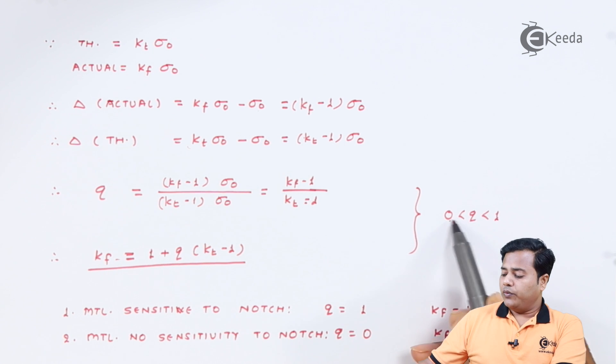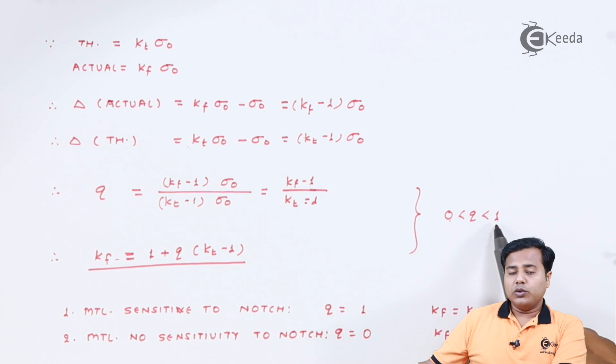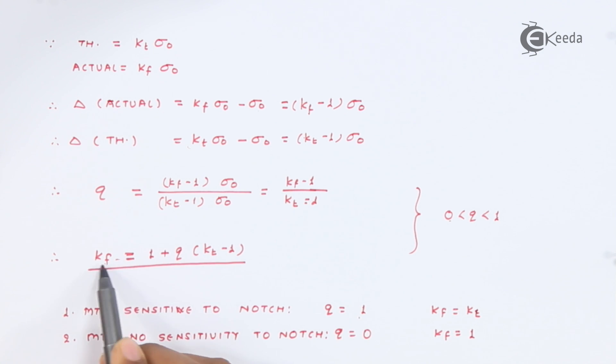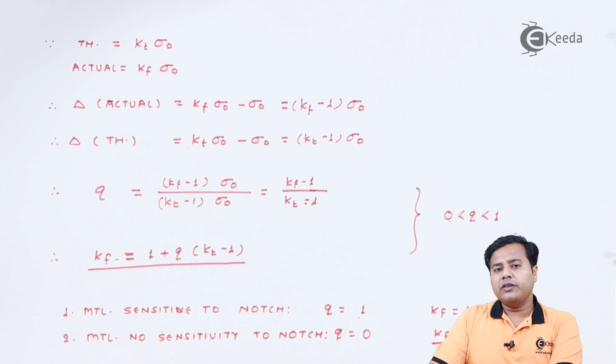But we knew that q value will always lie between 0 to 1. It will be of course greater than 0, but it will be smaller than 1. As we have seen in the last slide, this particular value, if we find out, we will get that material sensitive to notch. If the q value is 1, in that case the value of Kf and Kt will be same. But if the material has no sensitivity towards the value, the value q will have 0 value, and the Kf factor in that case will become 1. So this is how the notch sensitivity comes into picture and plays a major role when we have to relate with the Kf and Kt.